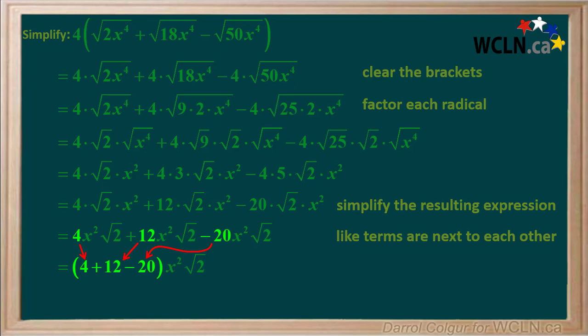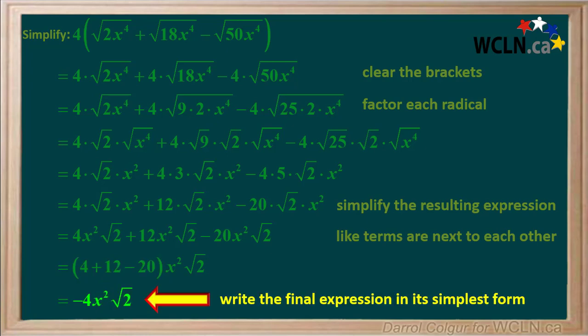This is the same as 4 plus 12 minus 20 in brackets times x squared root 2. 4 plus 12 minus 20 is equal to negative 4. So the final expression in its simplest form is negative 4x squared root 2.